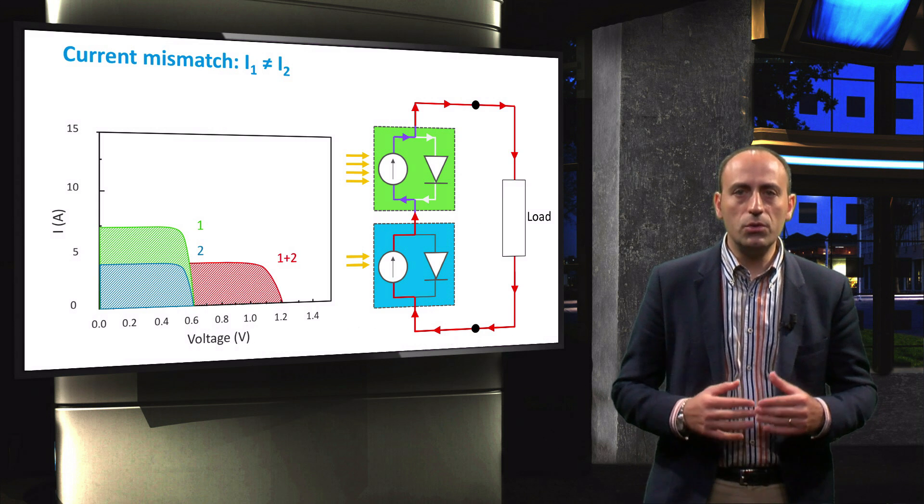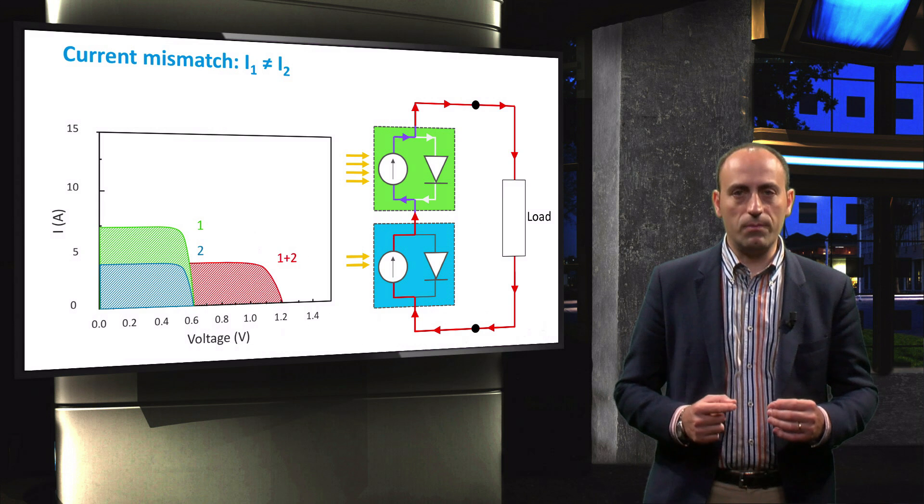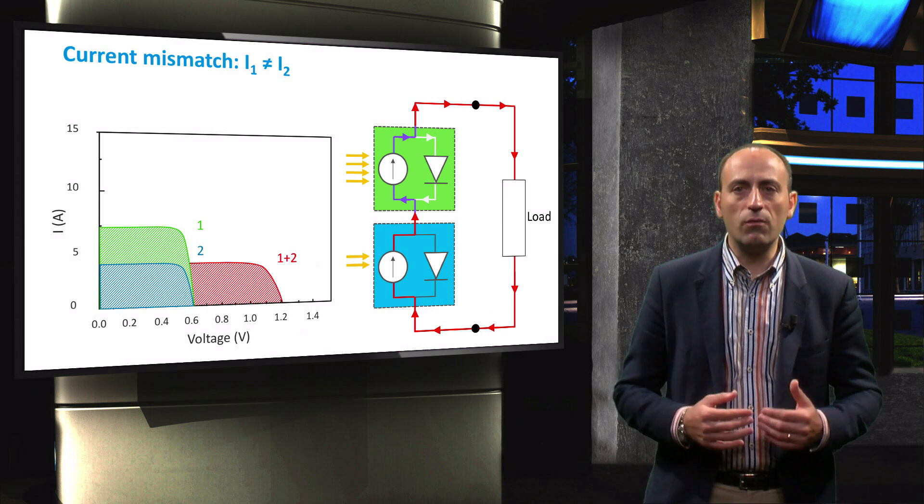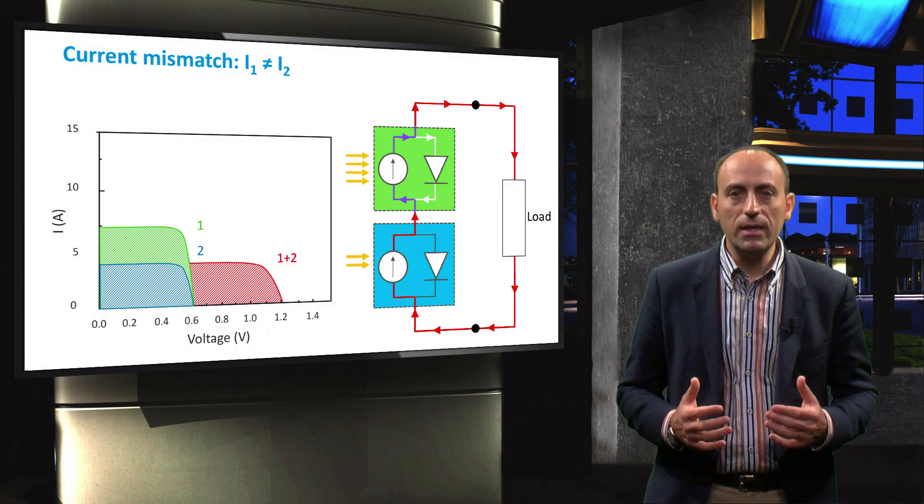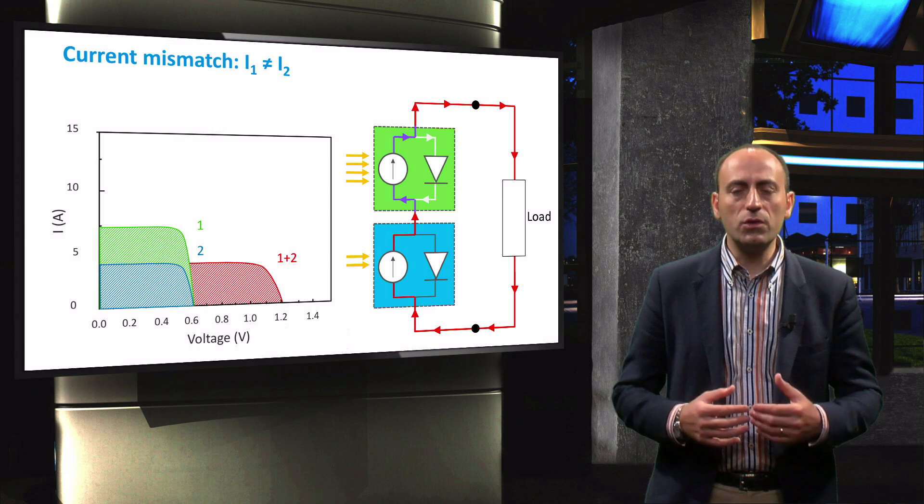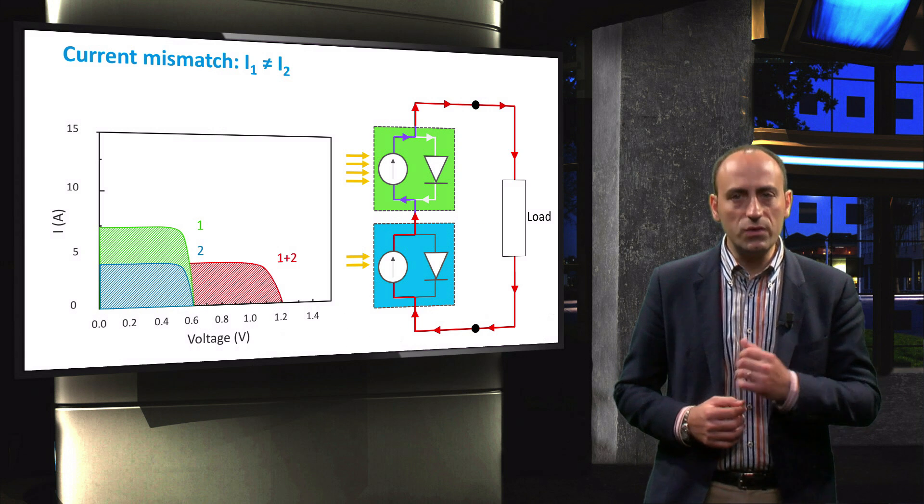The current through the two cells must be the same. Therefore, the total current cannot exceed that of the cell with the lowest current. Basically, the current difference between cell 1 and cell 2 is forced to go through the diode of the good cell 1.